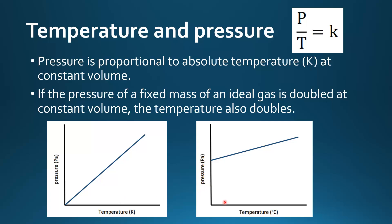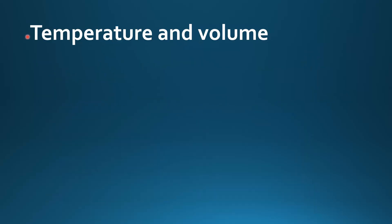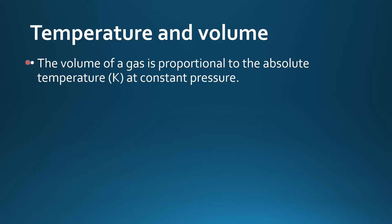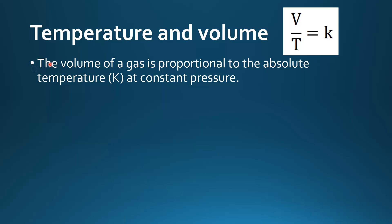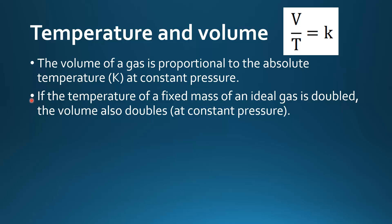If pressure is plotted against temperature in degrees C we also have a linear graph. Next we look at the relationship between temperature and volume. The volume of a gas is proportional to the absolute temperature in Kelvin at constant pressure. This can be represented by V over T equals K constant. If the temperature of a fixed mass of an ideal gas is doubled, the volume also doubles.